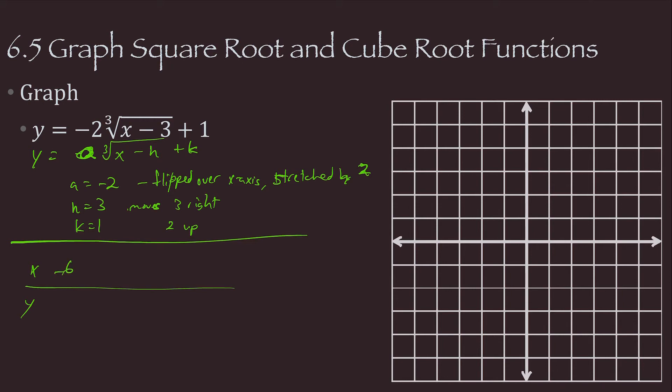And so, when x is negative 6, y is about 5.2. When x is negative 5, y is 5. When x is negative 4, y is about 4.8. When x is negative 3, y is about 4.6. Negative 2 is about 4.4. Negative 1 is about 4.2. 0 is about 3.9. 1 is about 3.5. 2 is about 3.5. 3 is about 4.4.